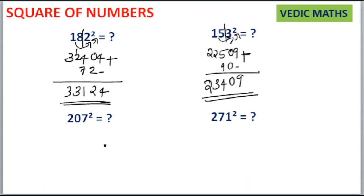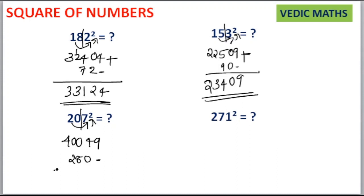Next is 207 squared. Split it as 20 and 7. 7 squared is equal to 49. 20 squared is equal to 400. Then 20 into 7 is equal to 140, and 140 into 2 is equal to 280. Leave the unit place, then write 280 here. Then add these terms together. Your answer is 42849.